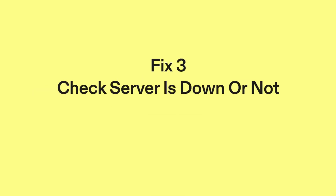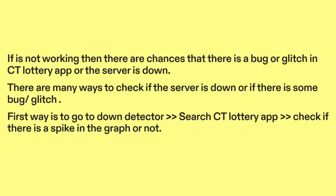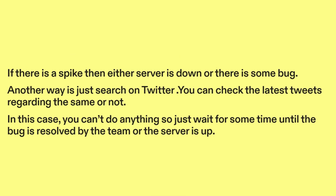Fix 3: Check if the server is down or not. If it's not working, there are chances that there is a bug or glitch in the CT Lottery app, or the server is down. There are many ways to check this. One way is to go to Down Detector and G-Tent. Search CT Lottery app and check if there is a spike in the graph. If there is a spike, then either the server is down or there is some bug.